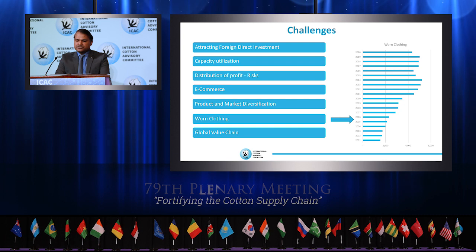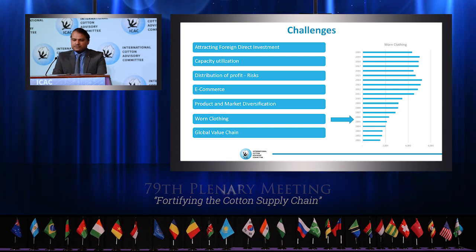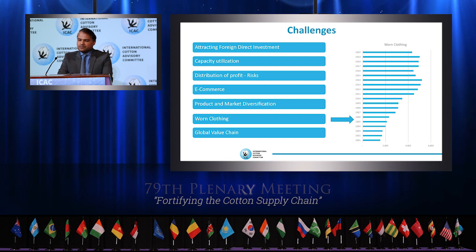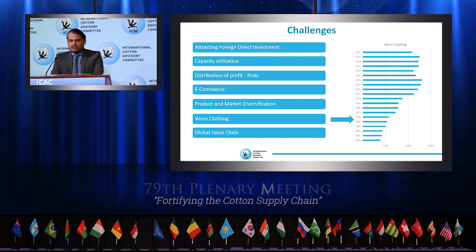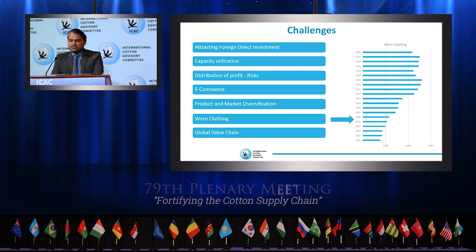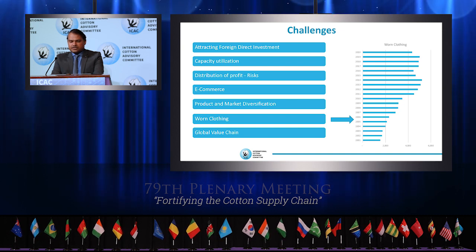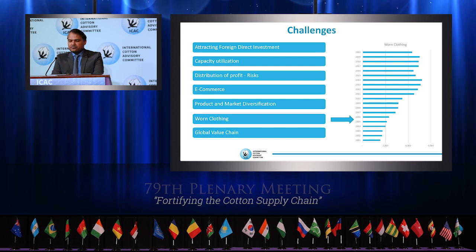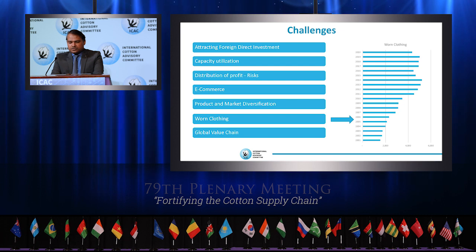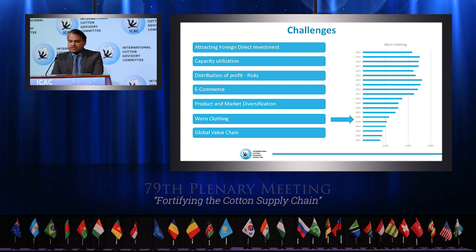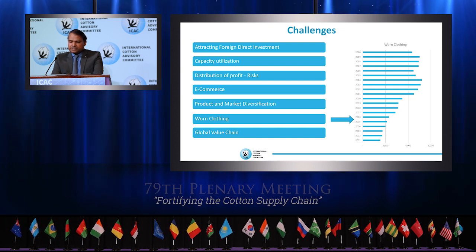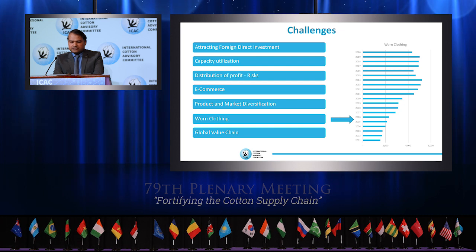Capacity utilization rates in various segments still show significant differences between upstream and downstream. For July 2021, fiber producers and spinners reported high average rates of 79% and 78% respectively, while finishers, textile chemical producers, and garment producers saw lower rates of 59%, 63%, and 68% respectively. Most segments are expecting capacity utilization rates to increase slightly by January 2022. Only garment producers and finishers anticipate lower rates of 59% and 56%.